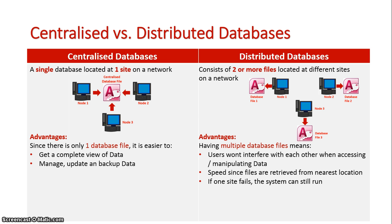A distributed database might also be faster on a larger network because the file may be saved in a location more localized to your workspace. Additionally, if one site fails, the complete system won't go down because there are still other database files to work from — perhaps not your specific department's, but existing files that can still be used by the company.